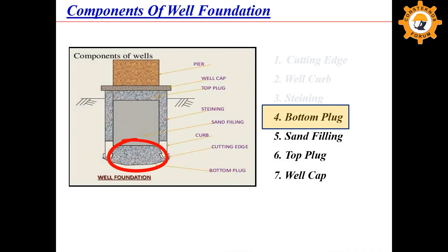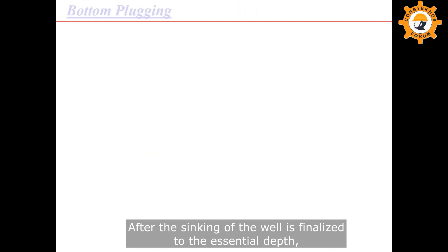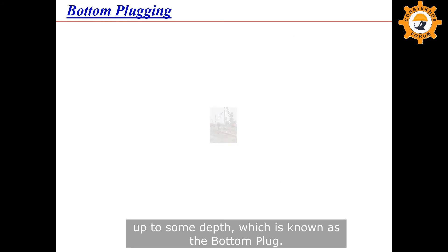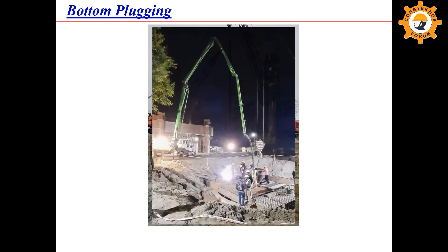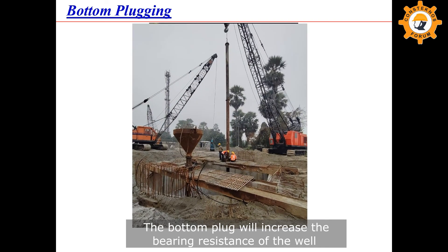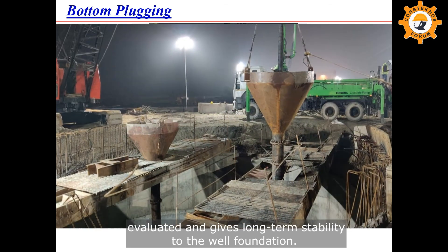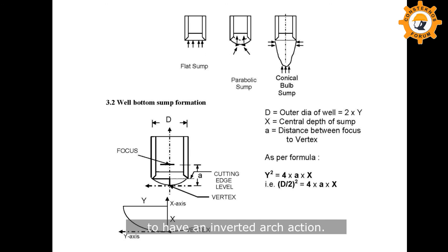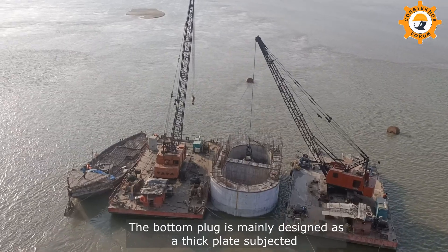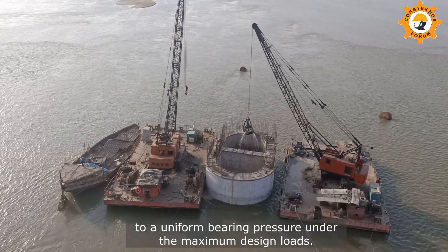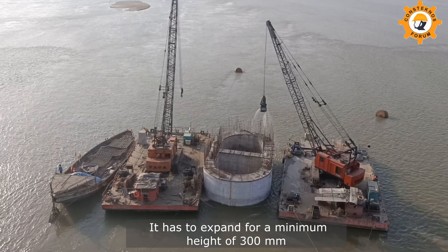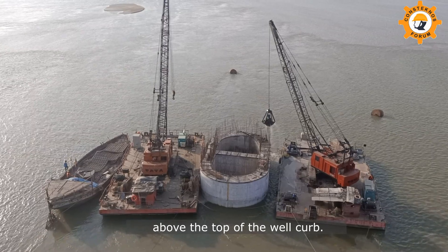After the sinking of the well is finalized to the required depth, the hollow dredge hole at the underside is concreted up to some depth, which is known as the bottom plug. The bottom plug increases the bearing resistance of the well and gives long-term stability to the well foundation. The surface of the bottom plug is made dome-shaped to provide an inverted arch action. The bottom plug is mainly designed as a thick plate subjected to uniform bearing pressure under the maximum design load, and must extend a minimum height of 300 mm above the top of the well curb.